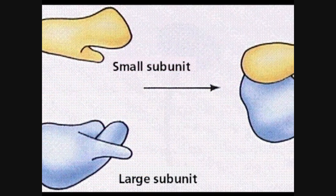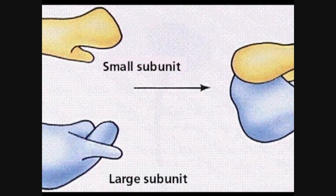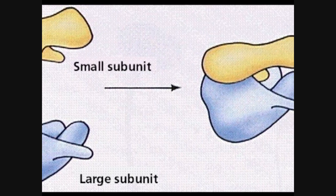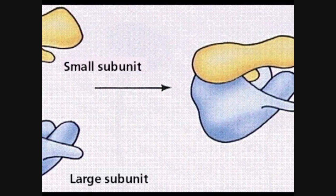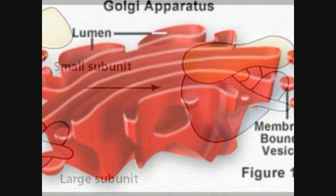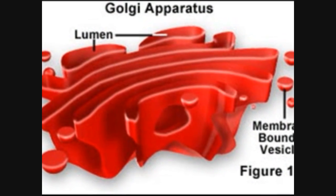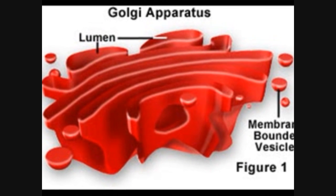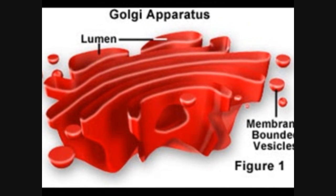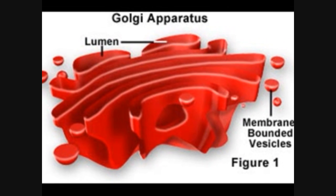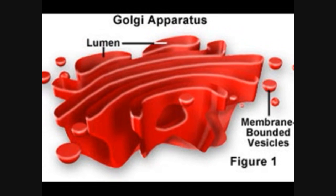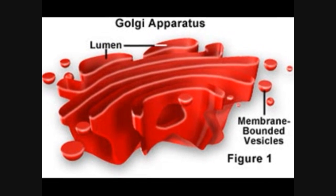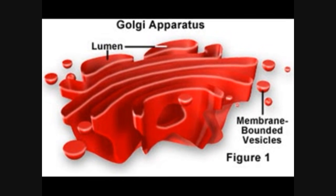Ribosomes are made of two subunits and they are the site for protein synthesis. The Golgi apparatus sorts, chemically alters, and packages materials that are sent throughout the cell and outside the cell.